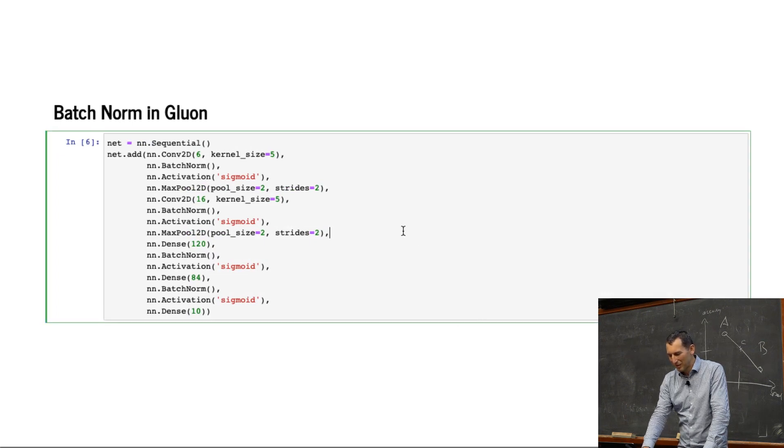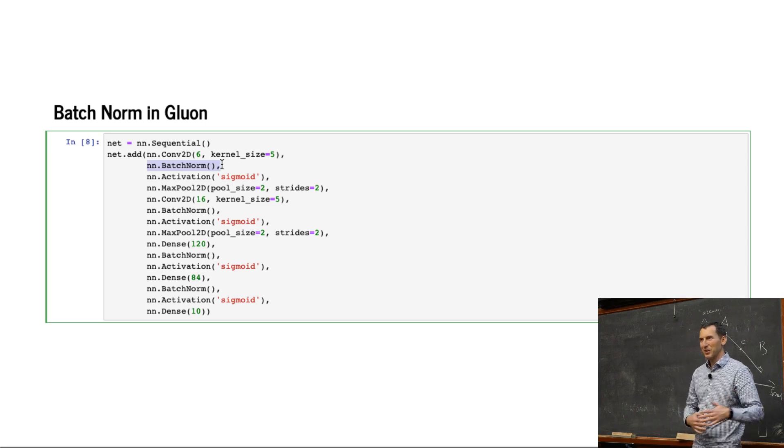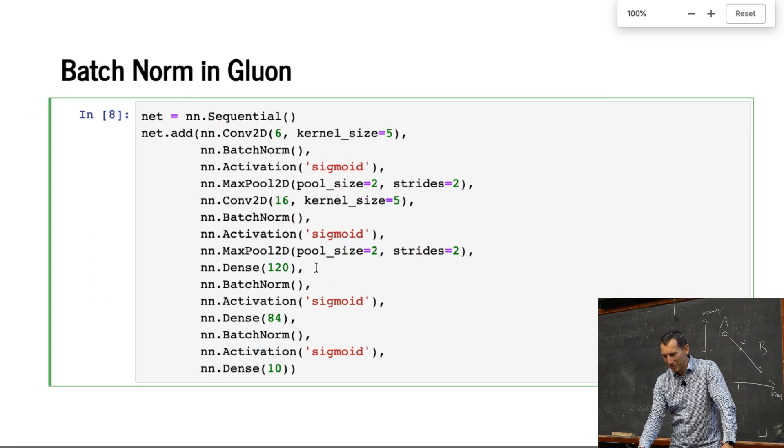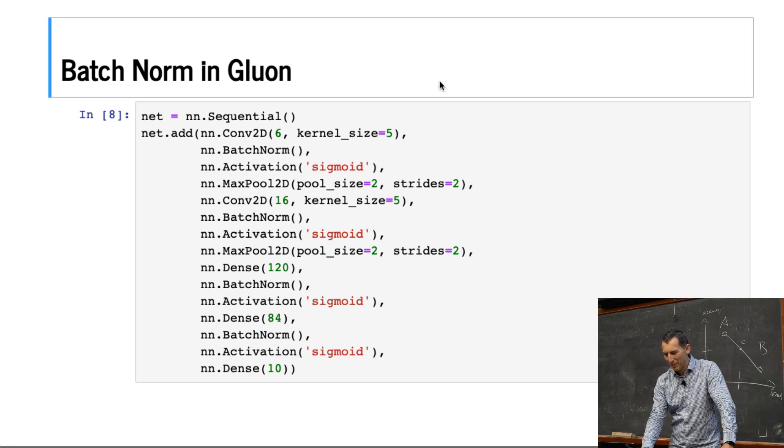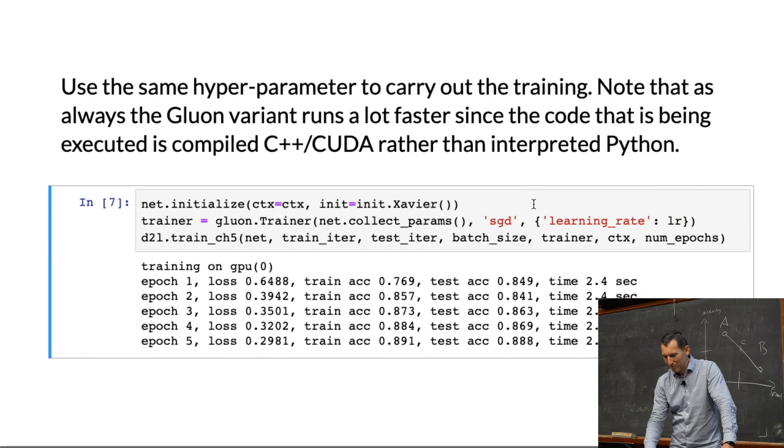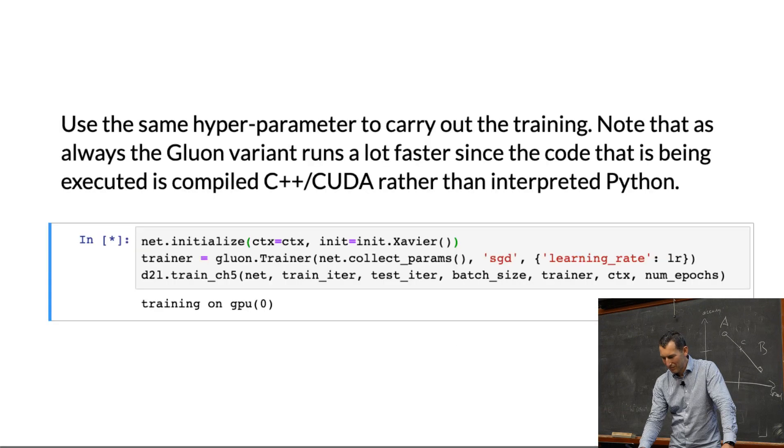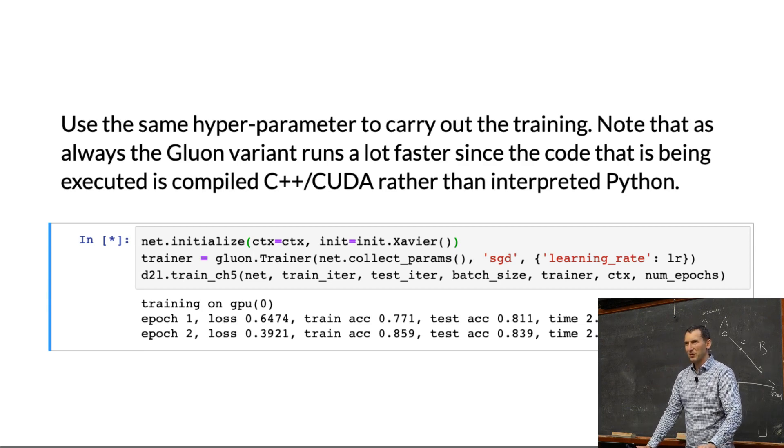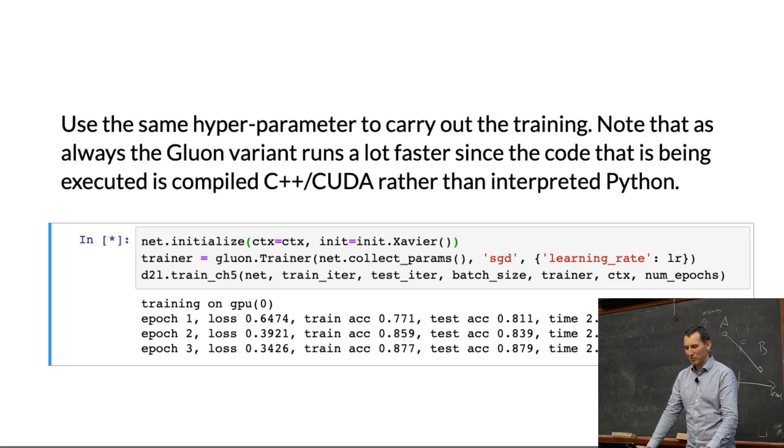Now let's actually do this entire thing in Gluon. And the only difference is that now rather than invoking batch norm, I just invoke nn.batch_norm. And I don't actually need to feed it any other parameters because it's smart enough to figure out from the context what the corresponding sizes are. So that requires a little bit more code but it doesn't actually change anything conceptually. Okay. And then let's run it.